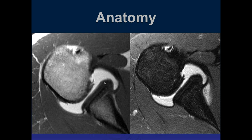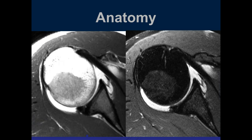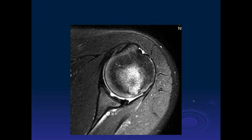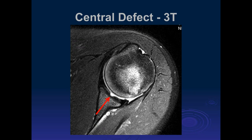In the axial plane, we can see the inferior labrum — anterior, inferior, and posterior inferior — then going up we see articular cartilages and the anterior and posterior labrum. In the coronal plane we can see the middle ligament, inferior labrum, and other structures. Just like in hip imaging, you can have a normal variant — a central defect in the articular surface — which can be a normal variant if it's right in the center of the bone.